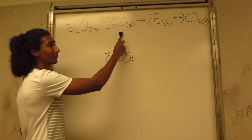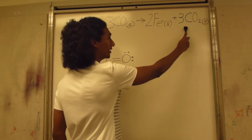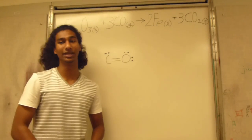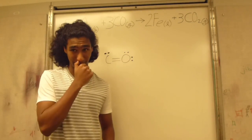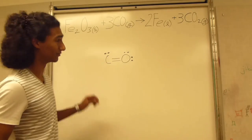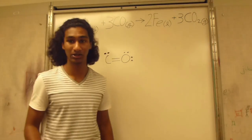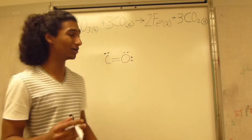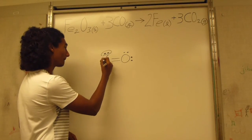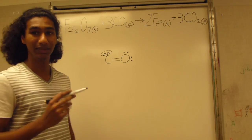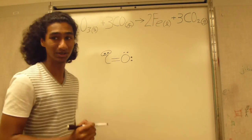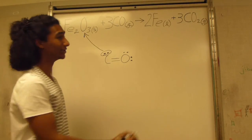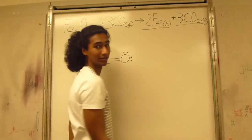Iron(III) oxide plus carbon monoxide produces pure iron and carbon dioxide. Iron has three valence electrons and oxygen has six. Iron(III) oxide has a full outer shell. Carbon has four valence electrons, oxygen again six. Carbon monoxide has one lone pair, and this lone pair reacts with the oxygen in the iron(III) oxide and produces iron and carbon dioxide.